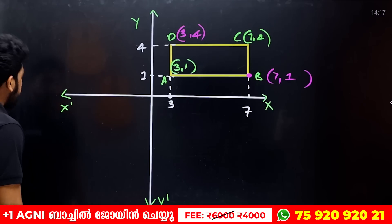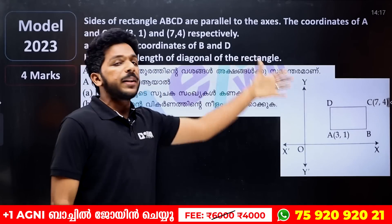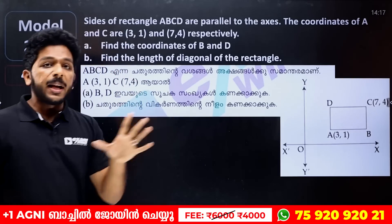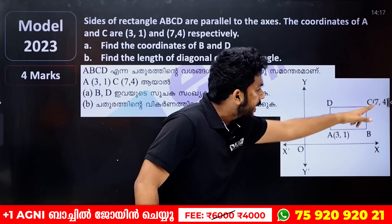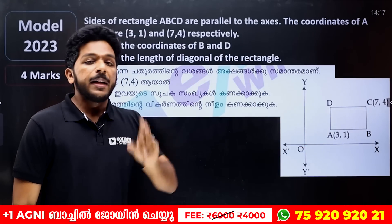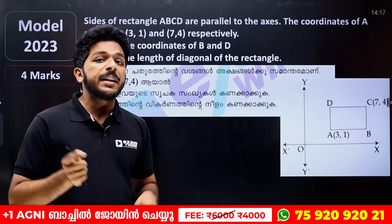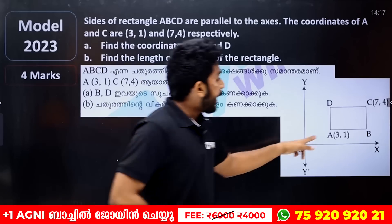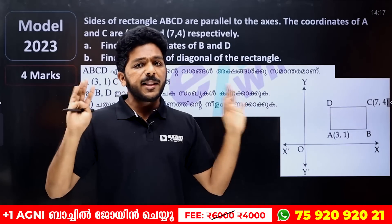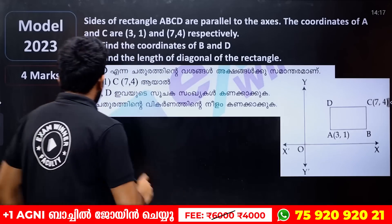Now we have 10 questions. We need to find the length of the diagonal. The diagonal is AC. In a rectangle, the diagonals AC and BD are equal. We will use the distance formula to find the length.